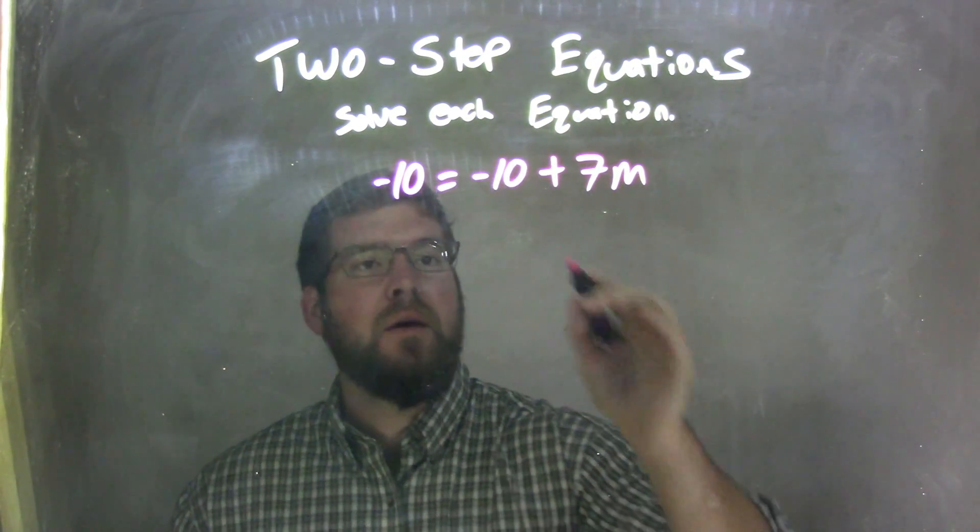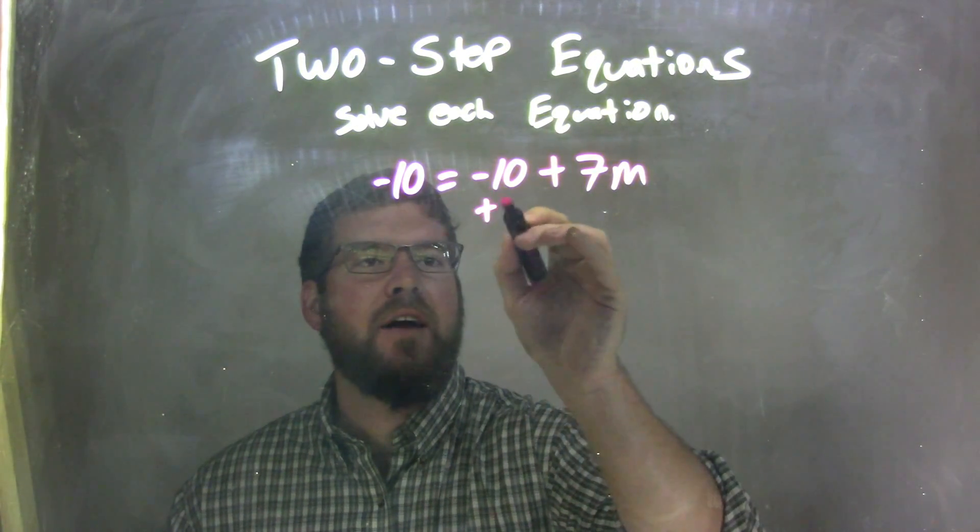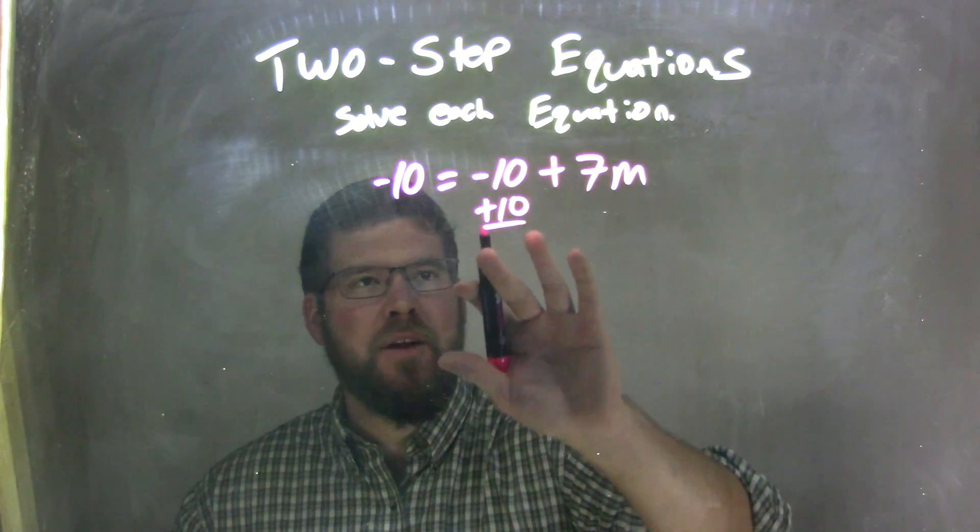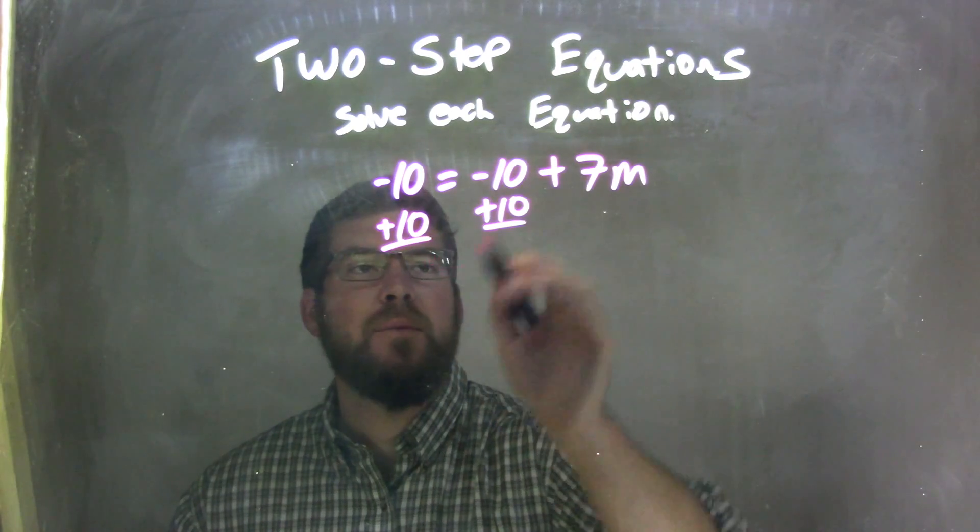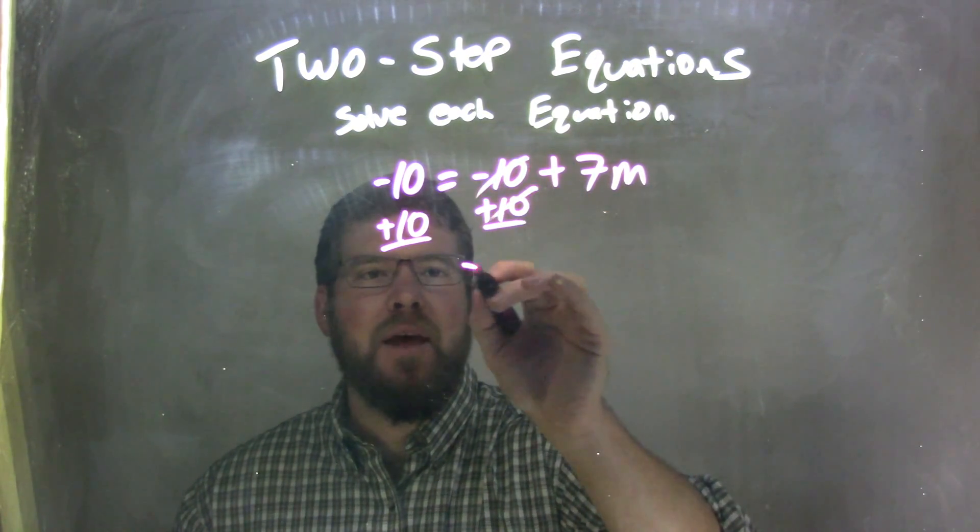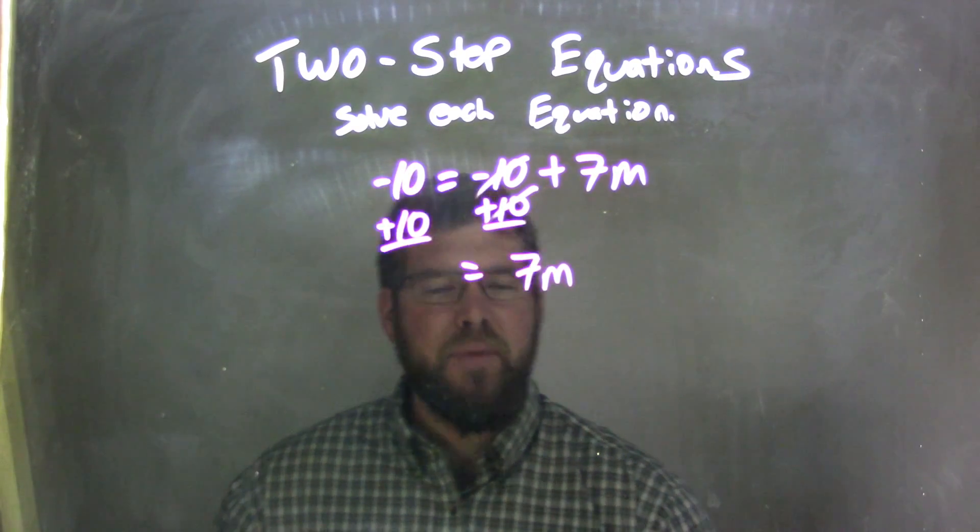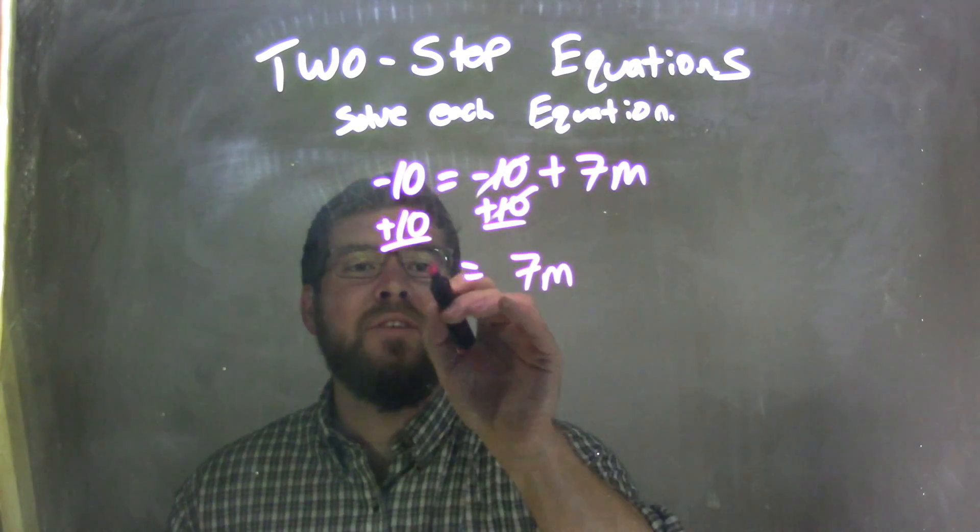Well, my first step here is I want to add 10 to both sides. I see that minus 10 there, and the only way I can bring it over to get rid of it on the right side and bring it over to the left is adding 10 to both sides. These 10s end up canceling. I bring down just this 7m, what's left, and negative 10 plus a positive 10, they cancel each other out too, and we're left with 0.